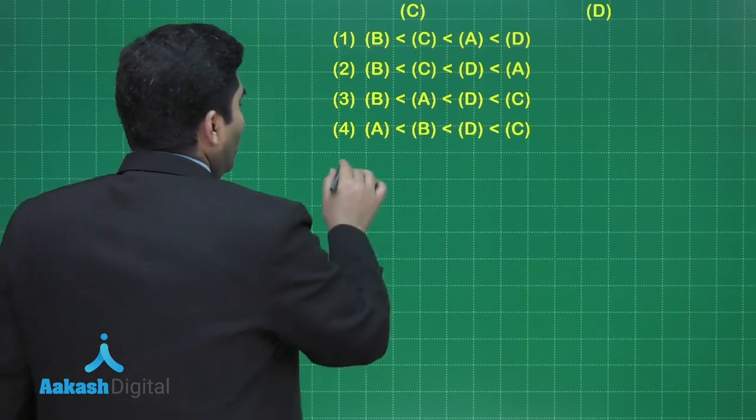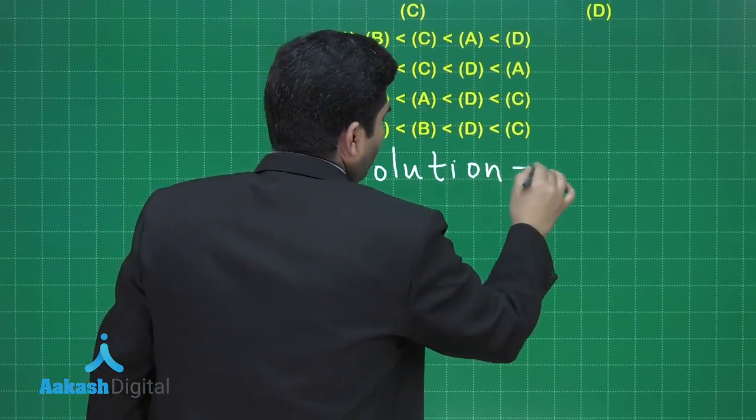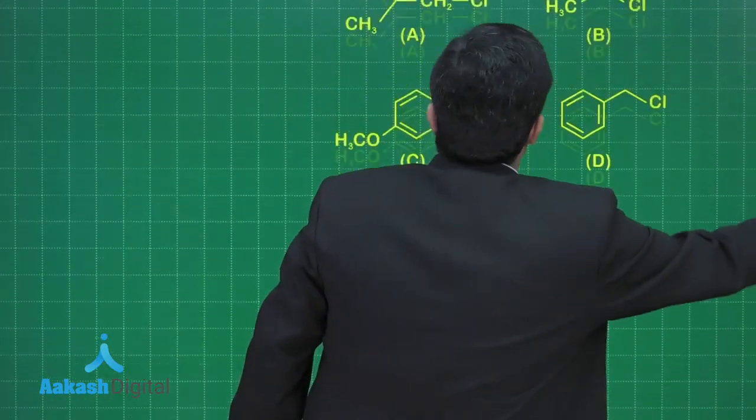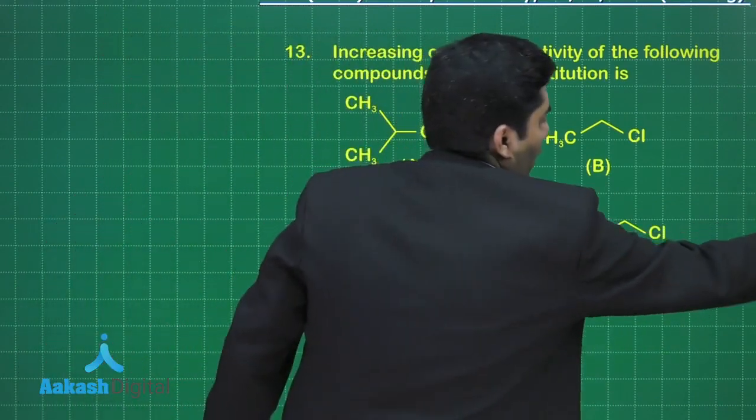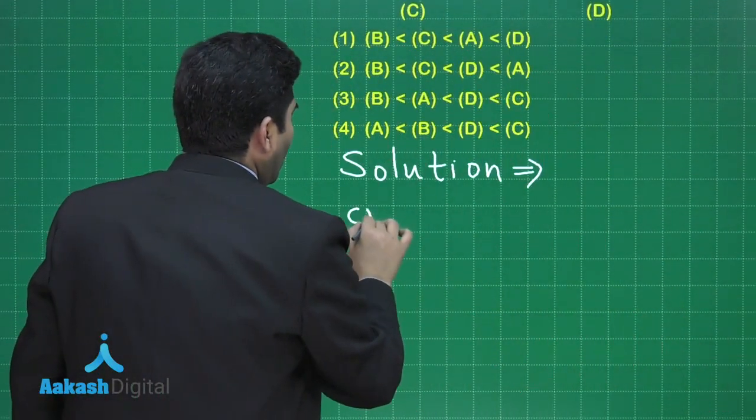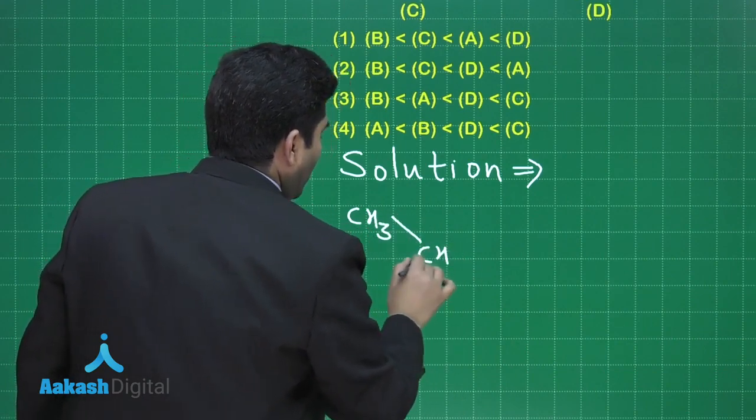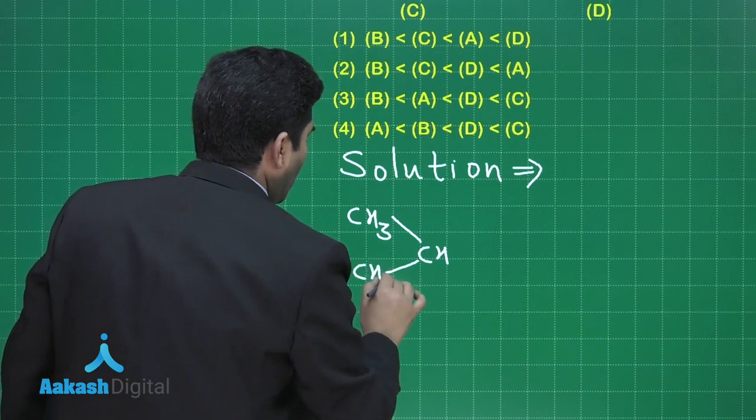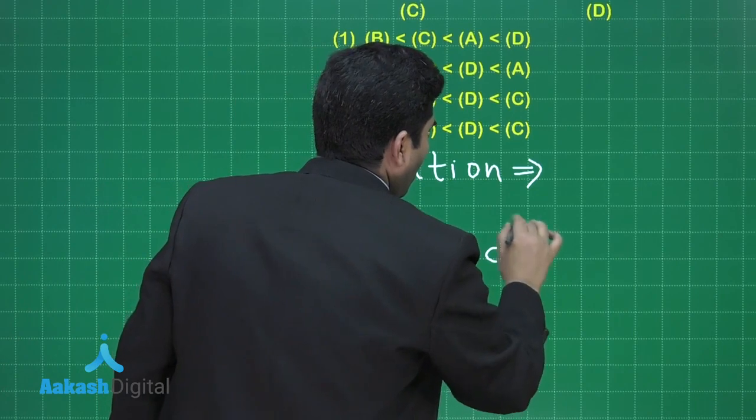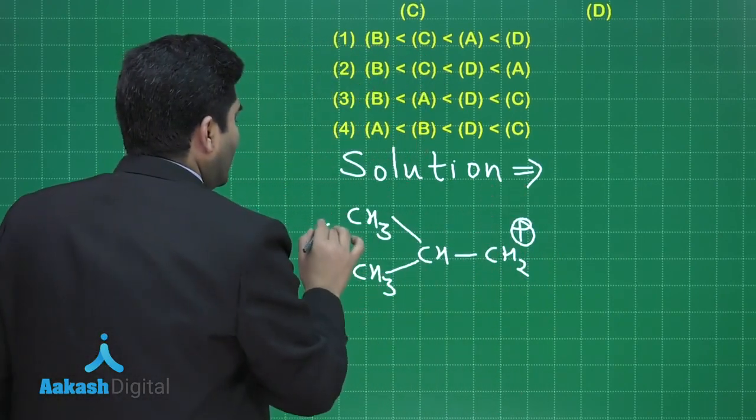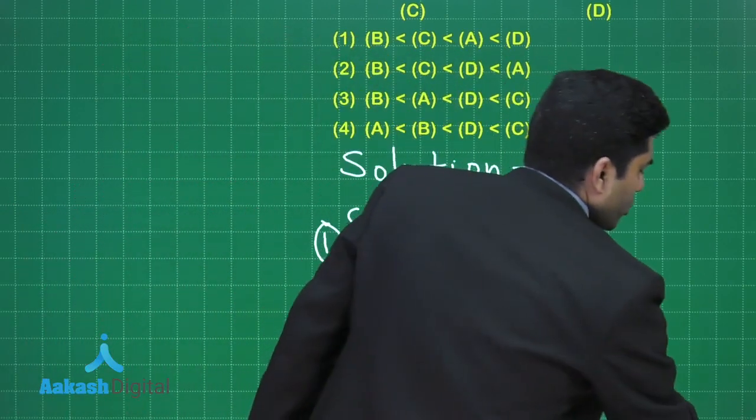Let us start with the first one. The solution, the first one is this compound, remove chlorine, you will get CH3, CH, CH3, CH2 plus. This is the first one, but it is the primary carbocation, it is not so stable.